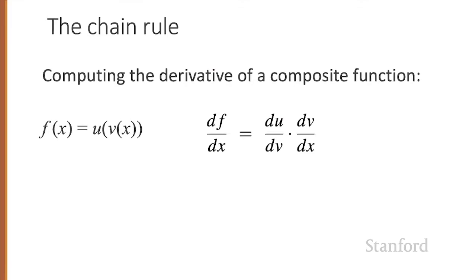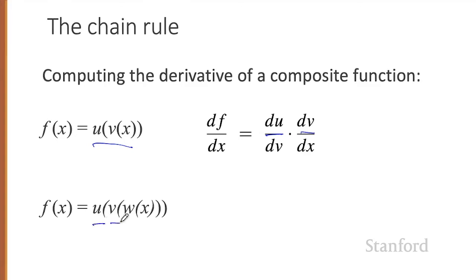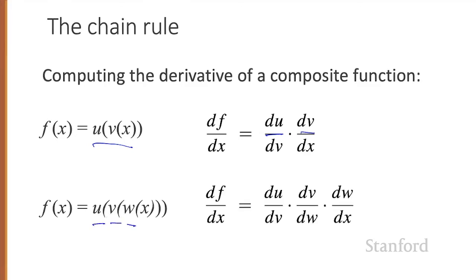Backward differentiation relies fundamentally on lots of application of the chain rule. Suppose we have a composite function F of X equal U of V of X. The chain rule tells us that the derivative of F of X is the derivative of U with respect to V times the derivative of V with respect to X. The chain rule extends to more than two functions: if F of X equals U of V of W of X, the derivative is the derivative of U with respect to V, times V with respect to W, times W with respect to X.